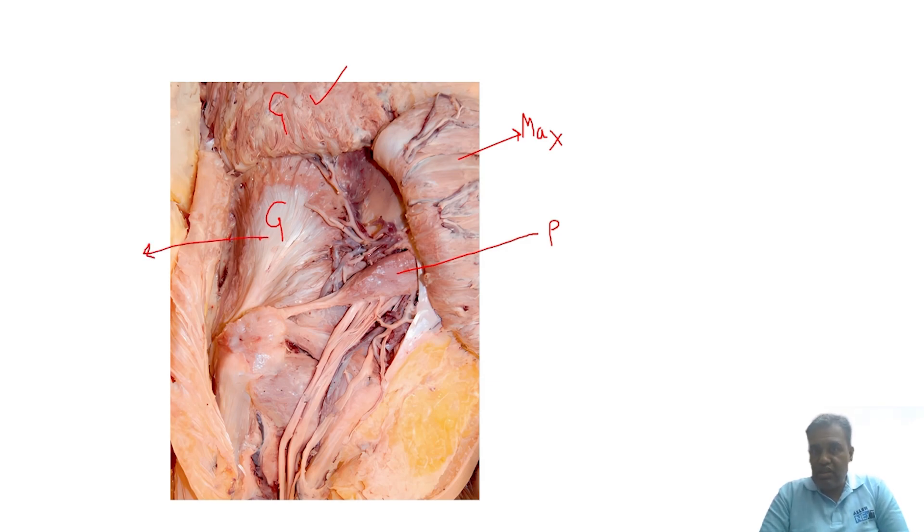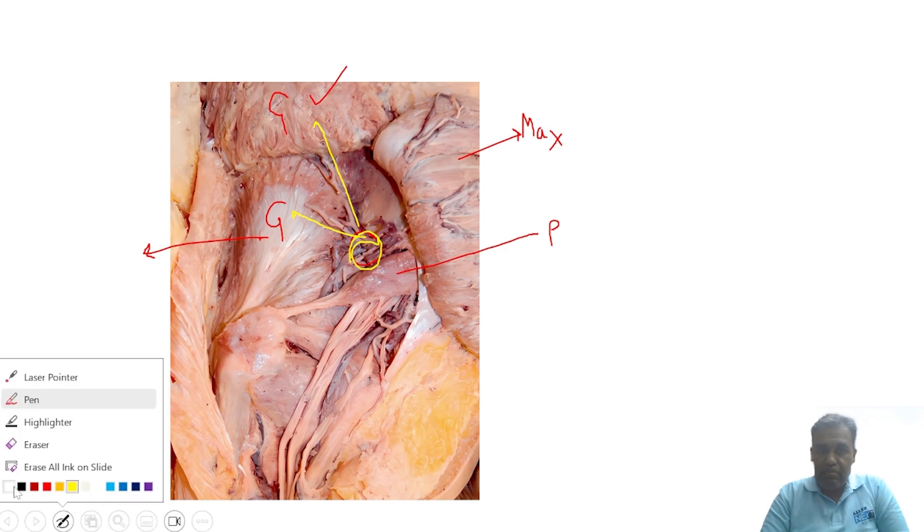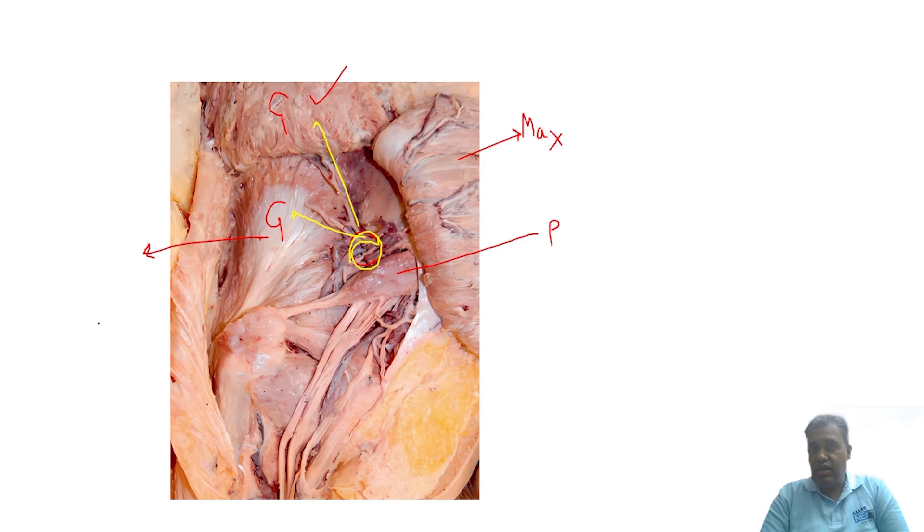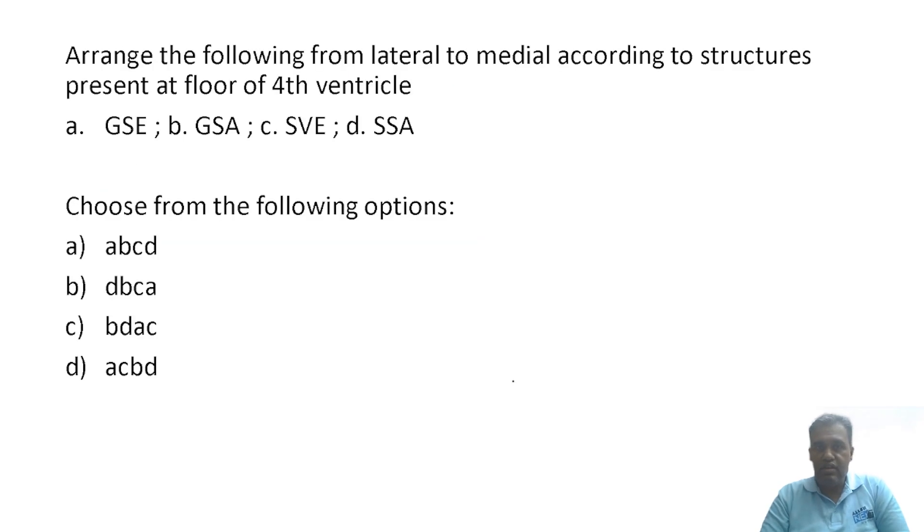Here is a cadaveric image showing the gluteal region of the left side. This is the piriformis, this is gluteus minimus overlaid by gluteus medius, and this is gluteus maximus. The nerves coming just above the piriformis are the superior gluteal nerve and vessels going towards the medius and minimus. This nerve below might be the sciatic nerve, the thickest nerve in the body. Answer is option B.